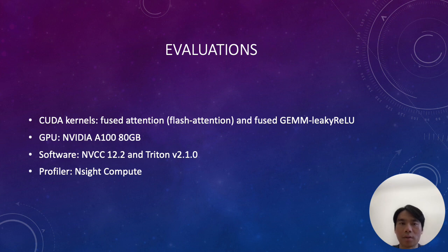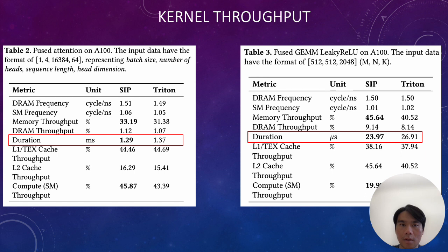For evaluation, we select two representative CUDA kernels: FlashAttention and a GEMM-like kernel. In both cases, SIP discovers an optimized kernel with lower runtime. In the case of FlashAttention, it is 6.2% lower. In the case of the GEMM kernel, it is 12% lower. The optimization mostly comes from L2 cache throughput, because L1 cache has negligible differences in our profiling results. This is consistent with our setting because we mostly reorder global memory read and write operations, which are associated with L2 cache.